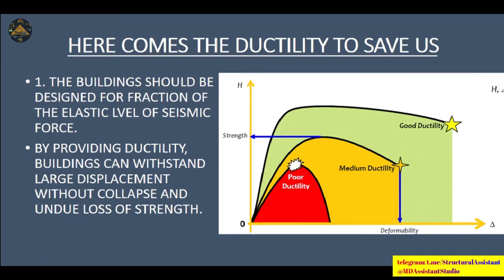For the remaining 85 percent of forces, we make the building ductile. Ductility is basically the elasticity applied in the building with the help of earthquake resistant reinforcement detailing. Every country has its code which guides how to detail the structure to increase the ductility of beam-column junctions, beams, and columns. Buildings should be designed for a fraction of elastic level of seismic force for economy, and by providing ductility, buildings can withstand large displacement without collapse. In the graph, poor ductility shows less strength and less deformability; medium ductility shows increased strength and deformability; and good ductility shows very high deformability and strength — strength, deformability, and ductility are proportional to each other.